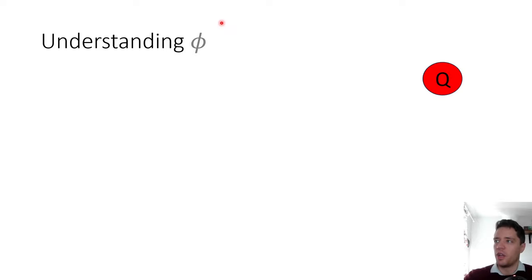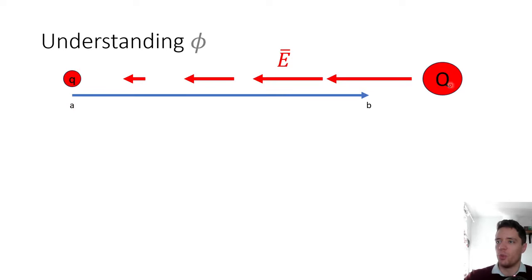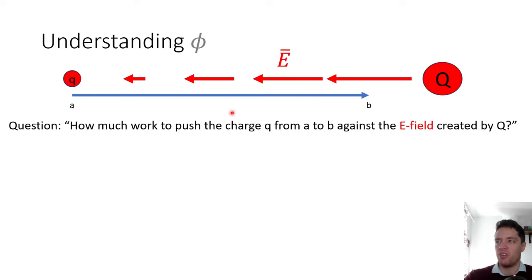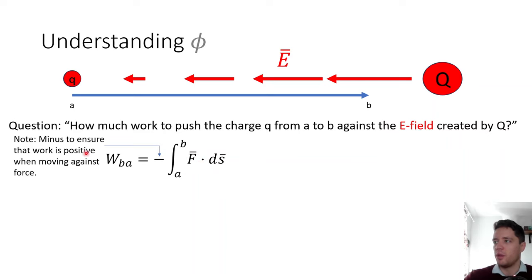To understand the electric potential φ, imagine creating a charged particle Q which sets up an electric field that varies with distance, and then place another charge q and consider what happens if we push it from point A towards point B, which is closer to Q. How much work does it take to move this charge q from A to B? To compute this work we integrate the force over distance, using a minus sign because we want the work to be positive when we move against the field set up by a positive charge.